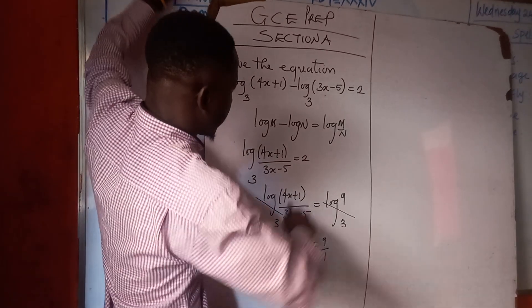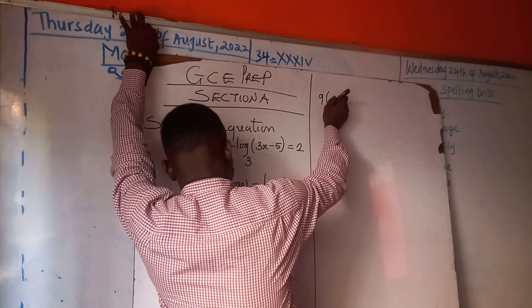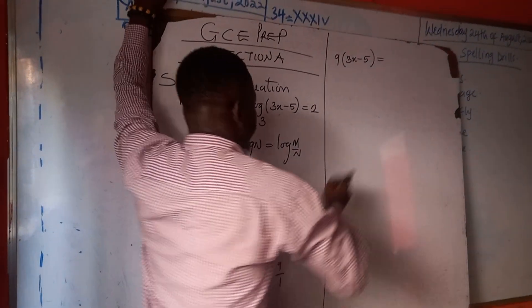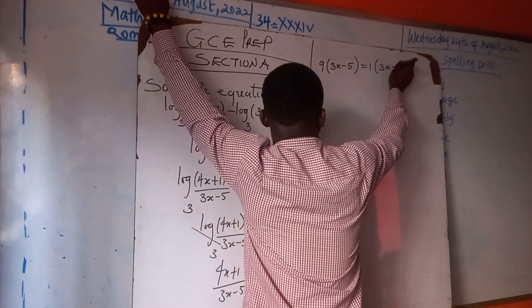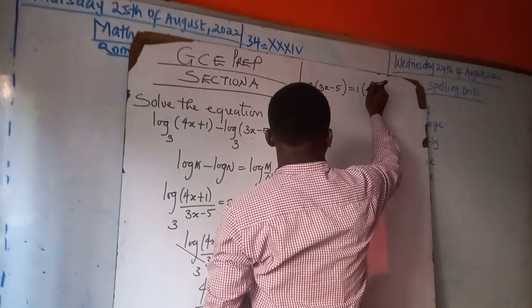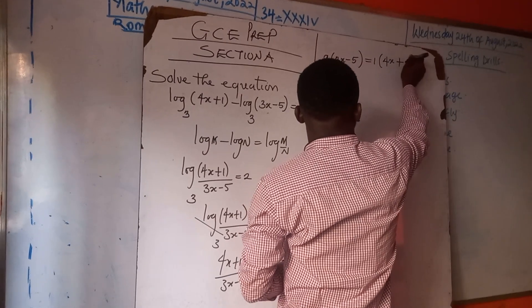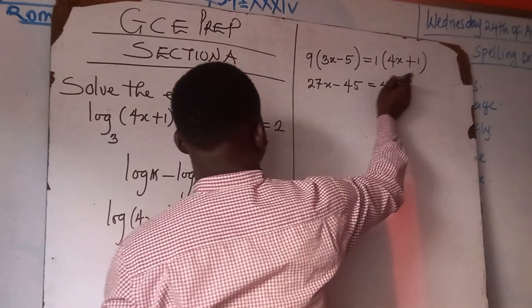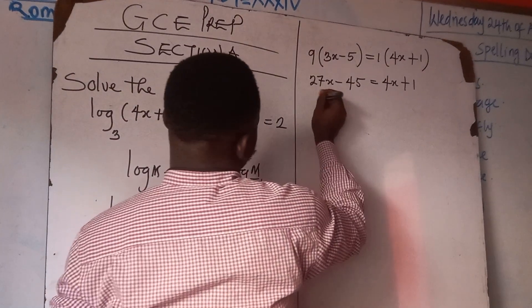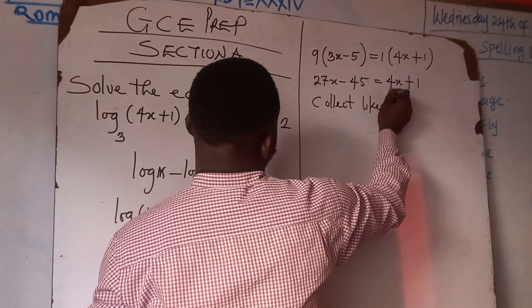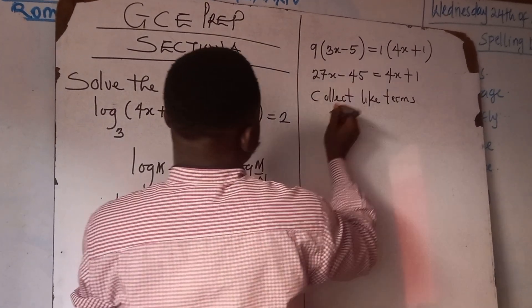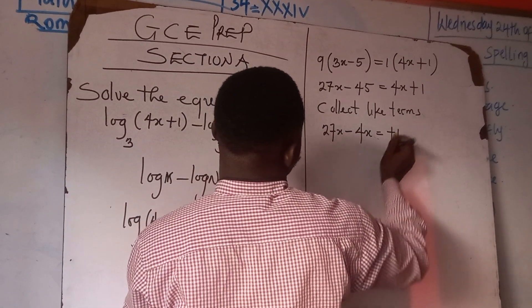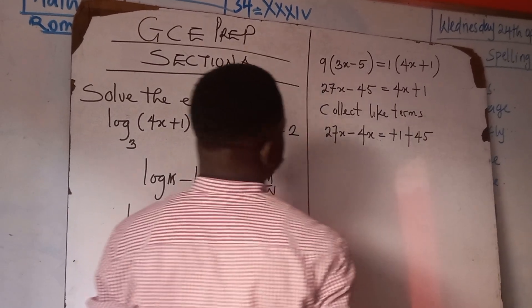So we cross-multiply: 9 multiplied by (3x-5) equals 1 multiplied by (4x+1). Opening the brackets we get 27x minus 45 equals 4x plus 1.